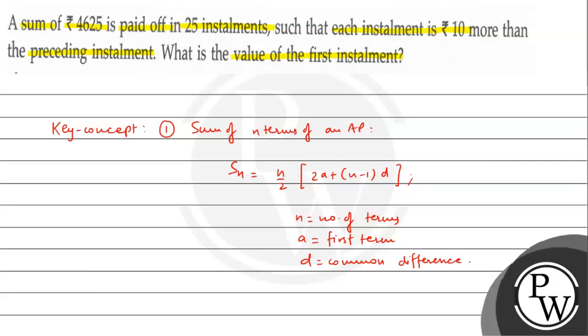So, the total sum is Rs. 4,625 and the number of installments is 25. Each installment is Rs. 10 more than the preceding installment, which means the common difference is Rs. 10, because the common difference is the difference between the next term minus the previous term.